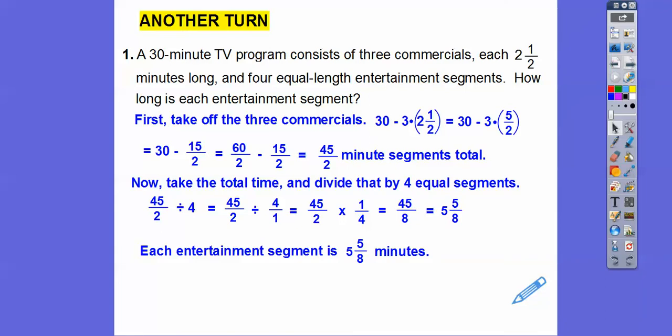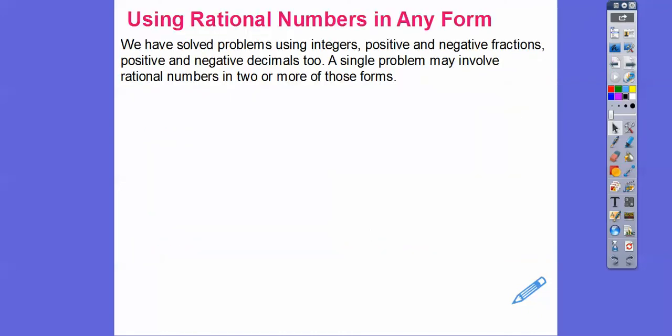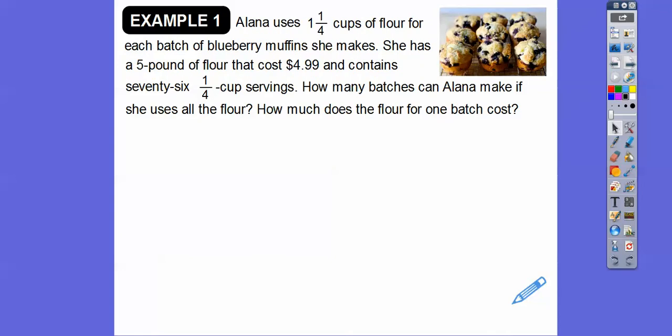Not even six minutes long and you get another commercial that's two and a half minutes — they kind of drive you crazy. So we've now solved problems using integers, positive and negative fractions, and positive and negative decimals. Sometimes problems will involve all of those, like what's coming up here. Elena uses 1 and 1/4 cups of flour for each batch of blueberry muffins. She has a five-pound bag of flour that costs $4.99 and contains 76 one-quarter-cup servings. So how many batches can Elena make using all the flour, and how much does the flour for one batch cost? There's a lot of information here, so let's recognize what we need.